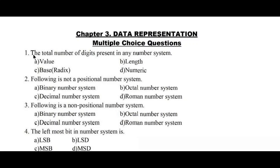Question number one: the total number of digits present in any number system. Options: A) value, B) length, C) base or radix, D) numeric. Here option C, base or radix, represents any number system, hence option C is the right answer.